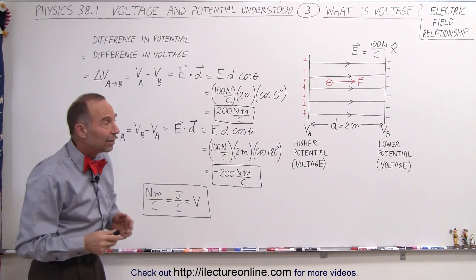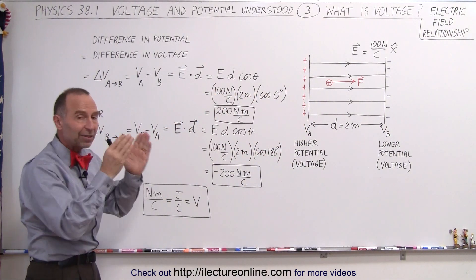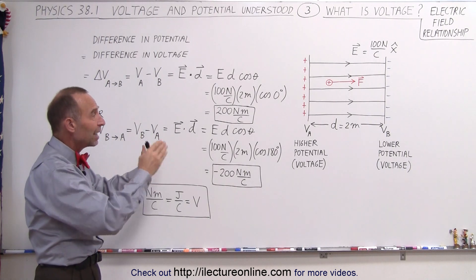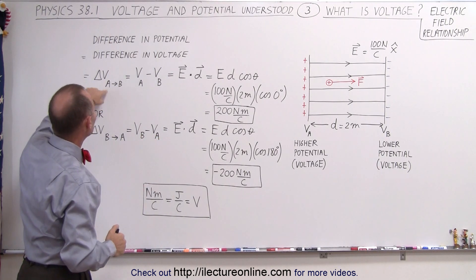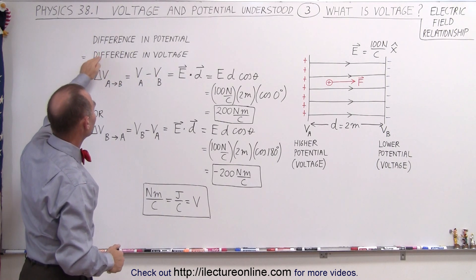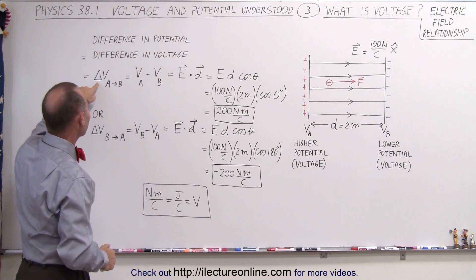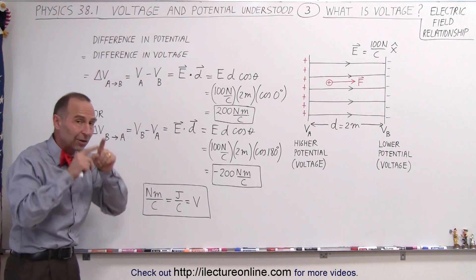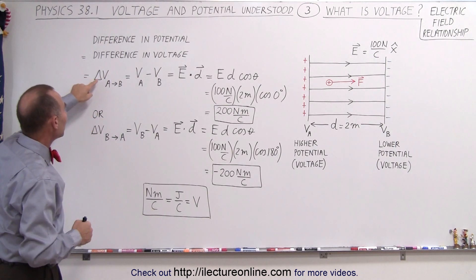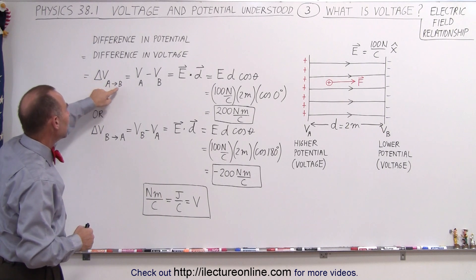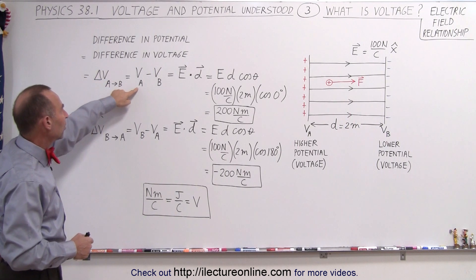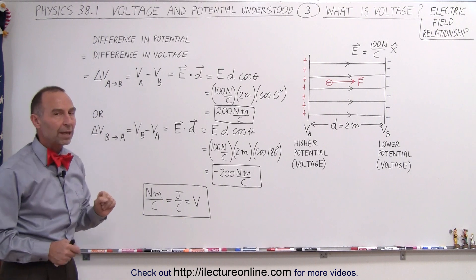What we find is that we can define the potential difference between those two plates — between V_A and V_B — as delta V. The symbol delta is the Greek letter for difference, so delta V represents the difference in voltage between A and B, and that's defined as the voltage at A minus the voltage at B.